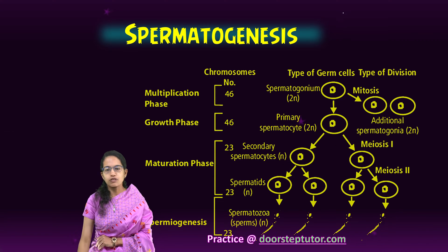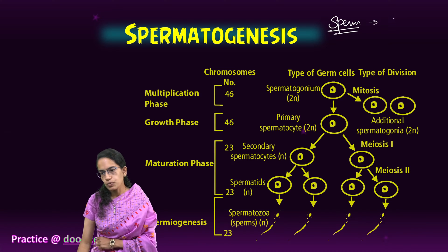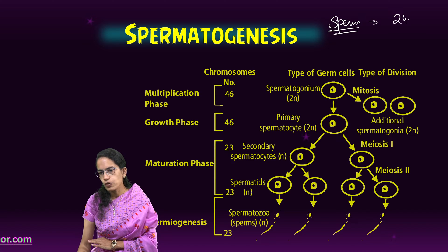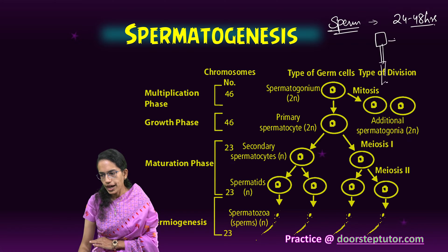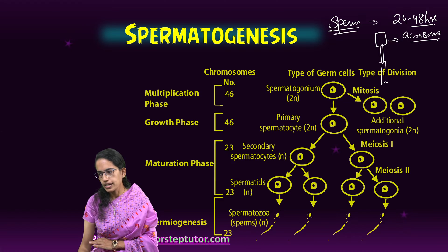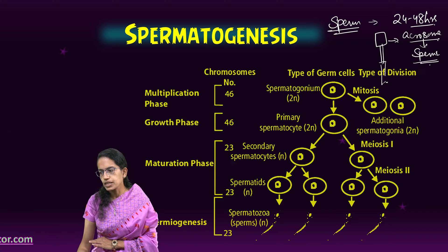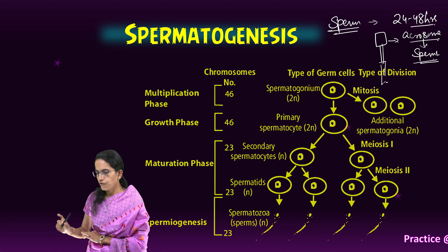If we talk about the structure of the sperm, that is again important. Sperm is microscopic and motile, viable for 24 to 48 hours. It has a head, a neck, a middle piece, and a tail. The head actually contains the acrosome and the posterior nuclei. The acrosome contains enzymes — lysins — for egg penetration, which happens during the process of fertilization.